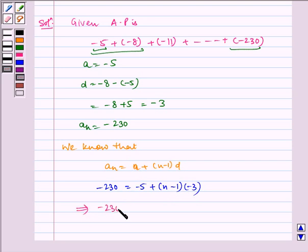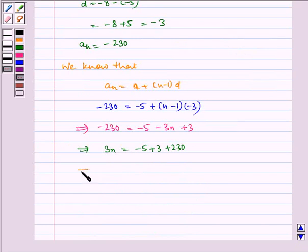It implies minus 230 is equal to minus 5 minus 3N plus 3 which implies 3N is equal to minus 5 plus 3 plus 230, which implies 3N is equal to minus 2 plus 230, which implies 3N is equal to 228, which implies N is equal to 76.